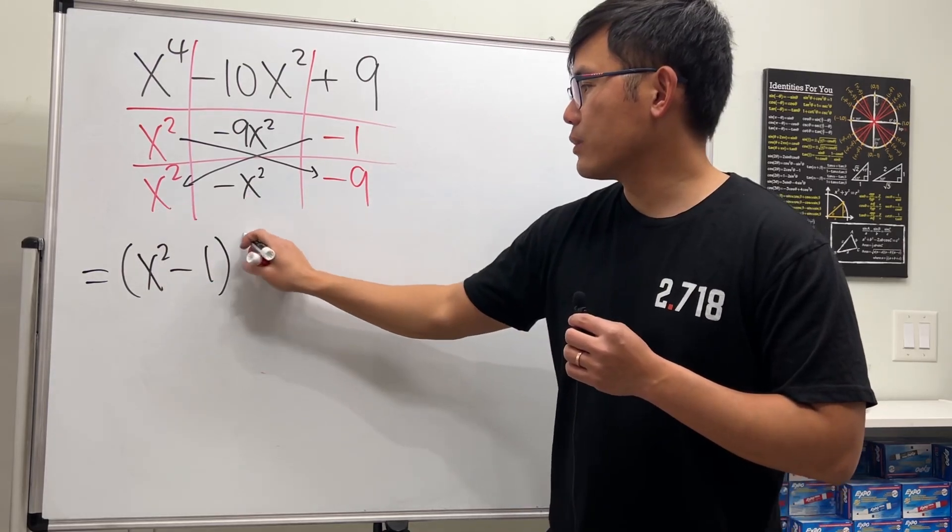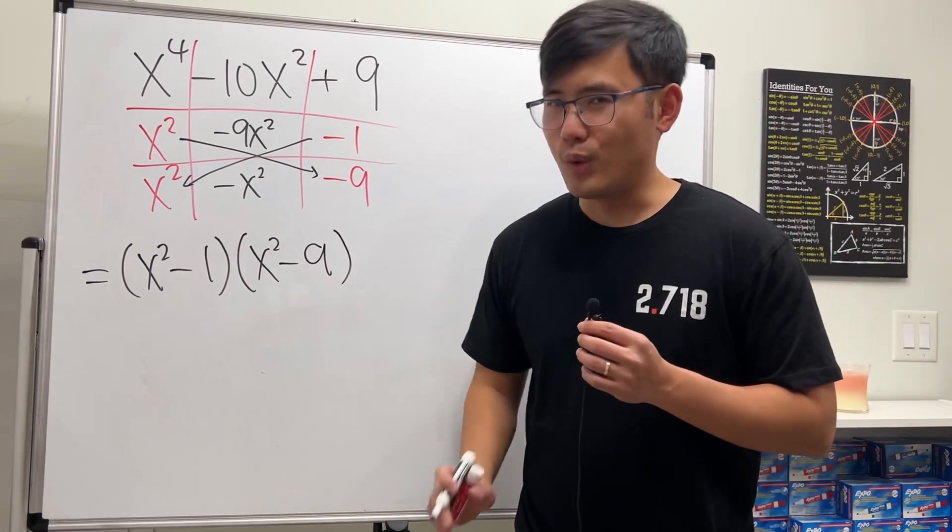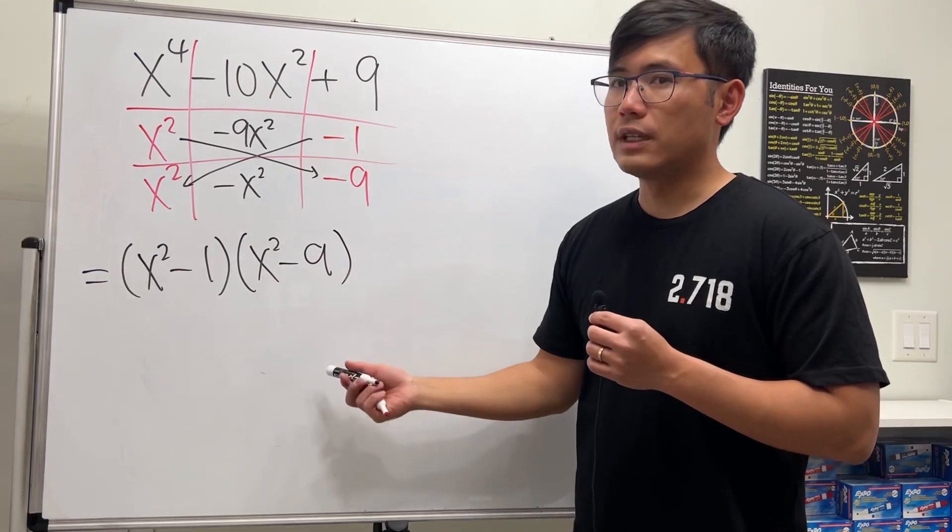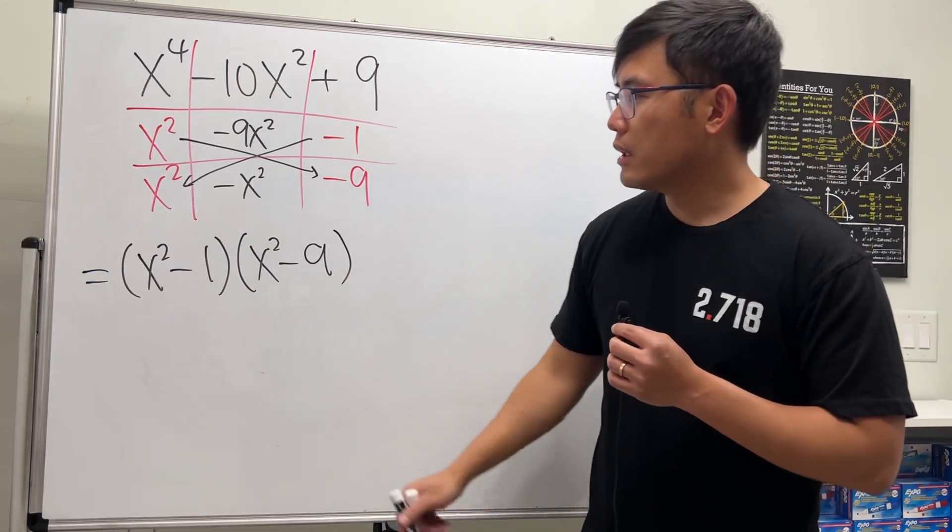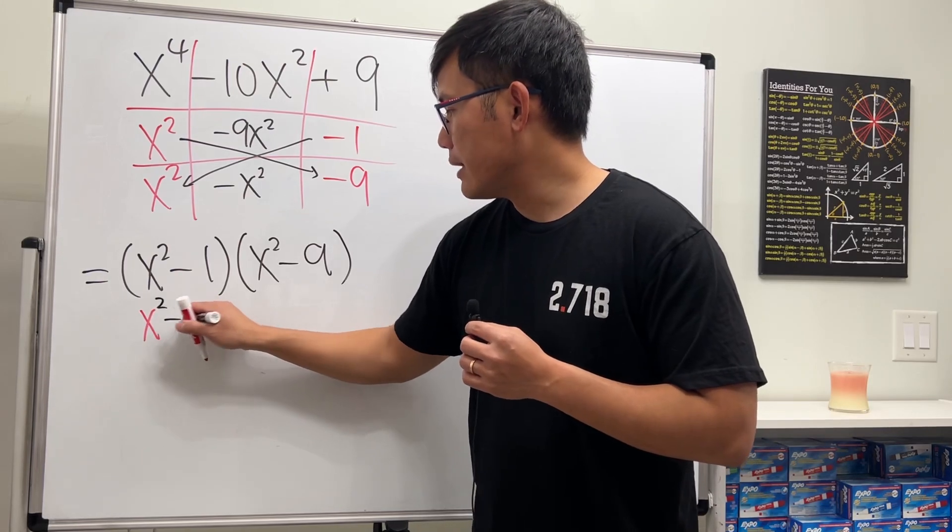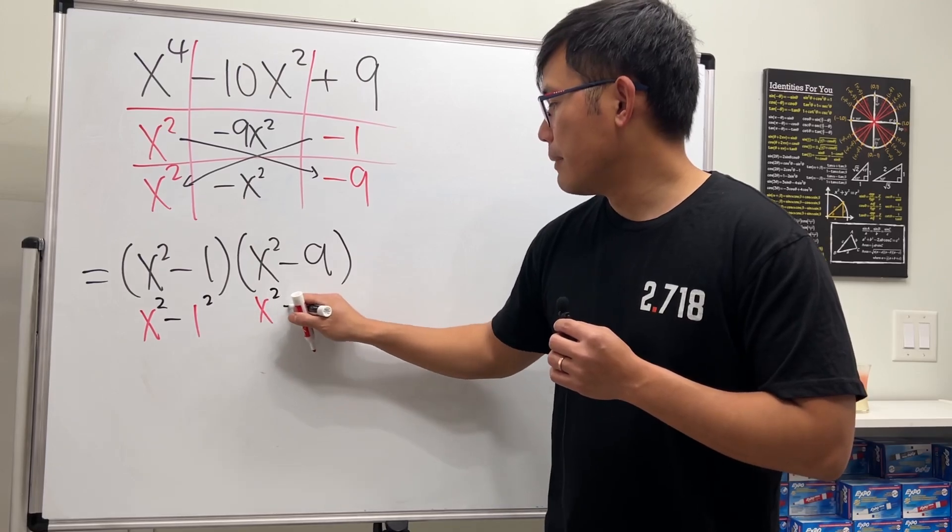Are we done? No, because this is the difference of two squares, and this is the difference of two squares as well, so we can keep on going. This right here is x squared minus 1 squared, and this right here is x squared minus 3 squared.